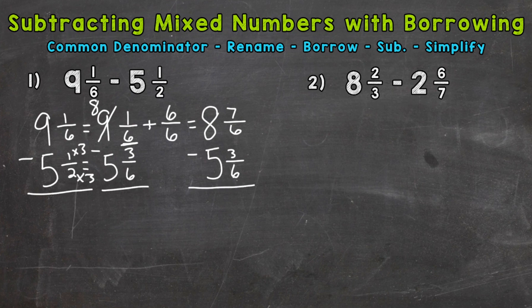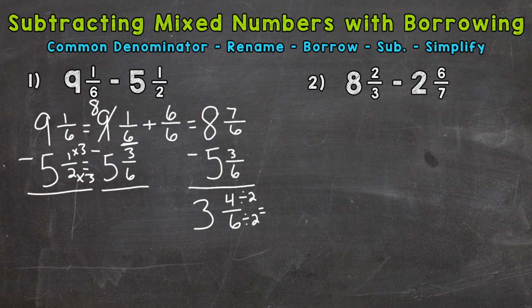So now we have eight and one plus six is seven over six, minus five and three-sixths. Now we're able to subtract. Seven minus three gives us four-sixths, and the whole numbers: eight minus five is three. Always check to see if you can simplify the fractional part. We have four-sixths, and the common factor between the numerator and denominator is two. Dividing both by two, we end up with three and two-thirds as our simplified final answer.